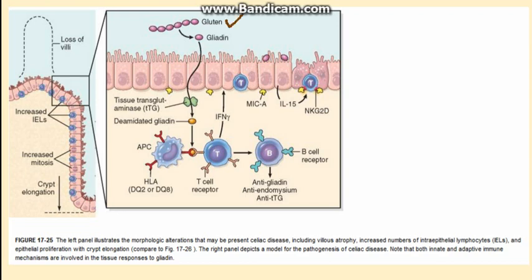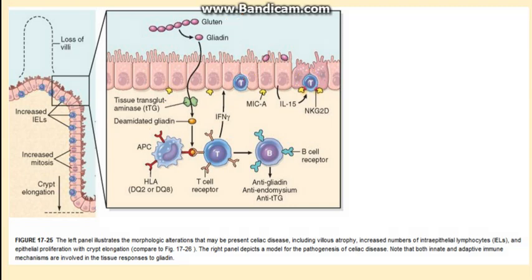Looking at the diagram: gluten is broken down into gliadin, which interacts with epithelial cells and activates intraepithelial CD8 lymphocytes, leading to tissue injury. The gliadin also passes into the lamina propria, where it interacts with tissue transglutaminase, gets deaminated, and is then presented by antigen-presenting cells to CD4 cells, causing further tissue injury.